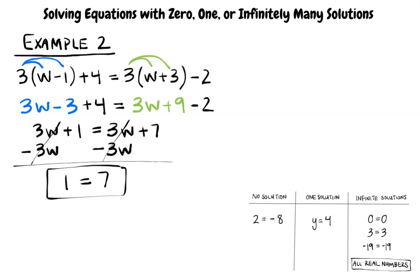This gives us the most simplified solution, 1 equals 7. But since 1 is never equal to 7, this equation is no solution. Therefore, it falls under the category no solution. Oh, I see now.